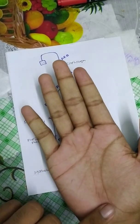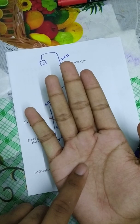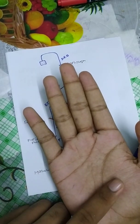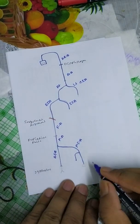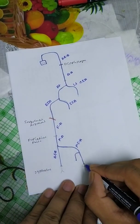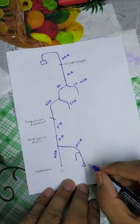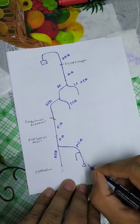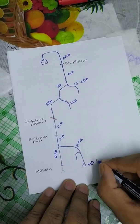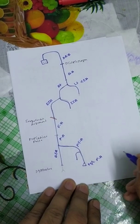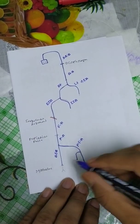The fibular artery is also called the peroneal artery. This artery supplies the plantar surface. Just as our hands have a palm surface, our foot has a plantar surface.